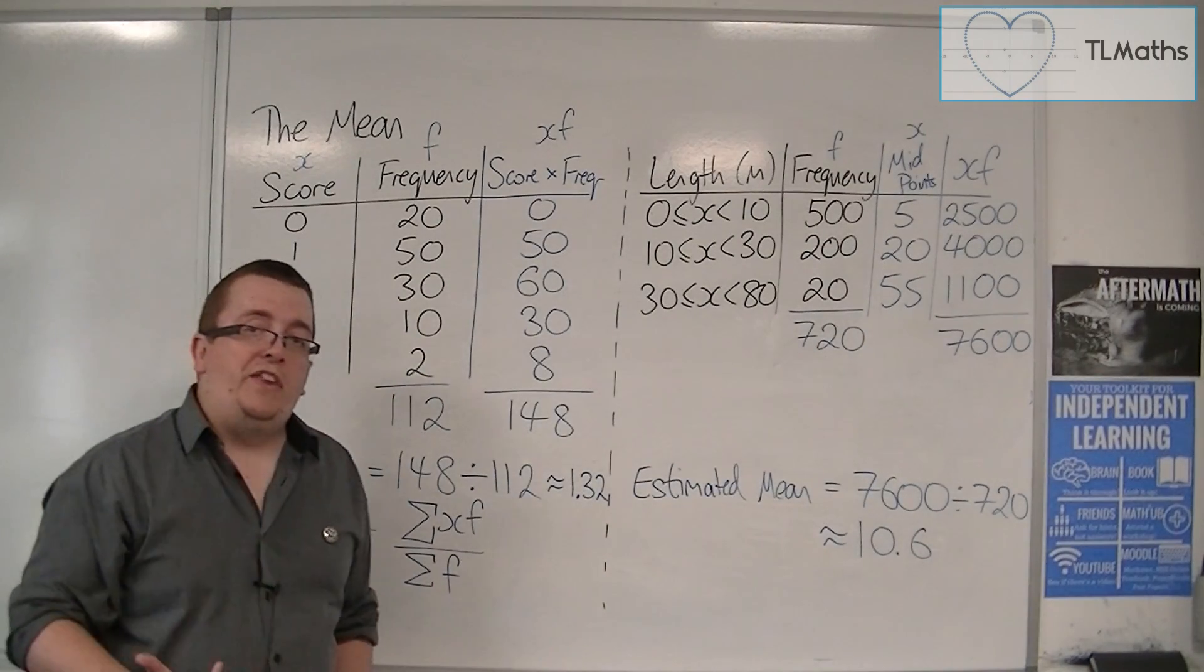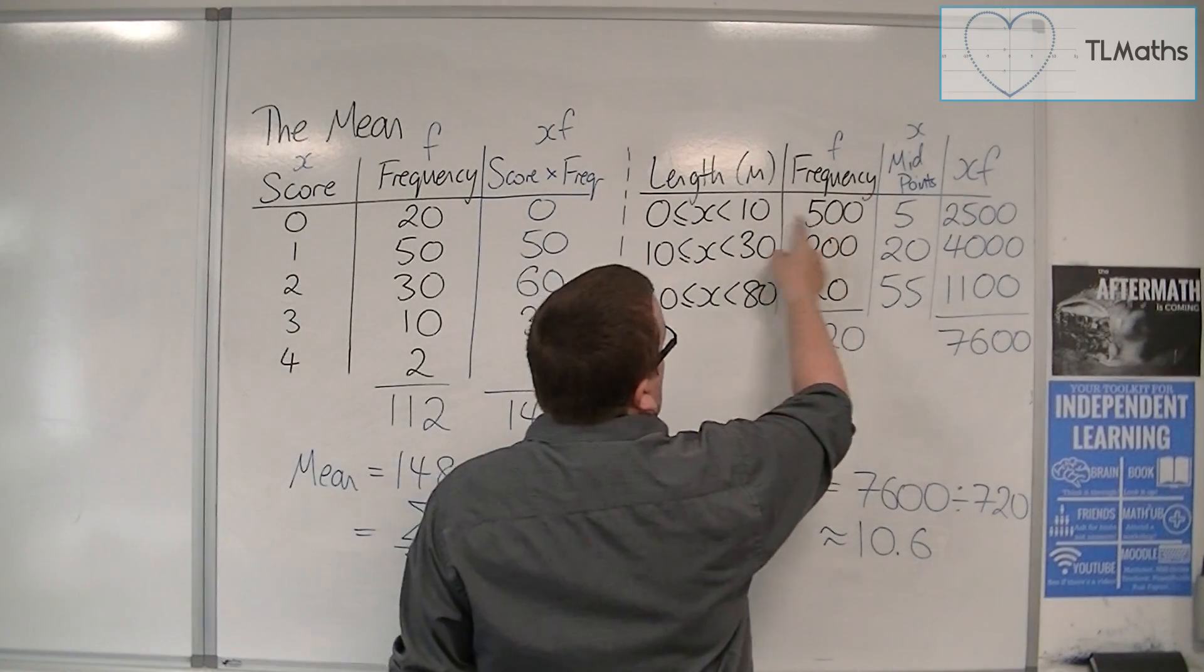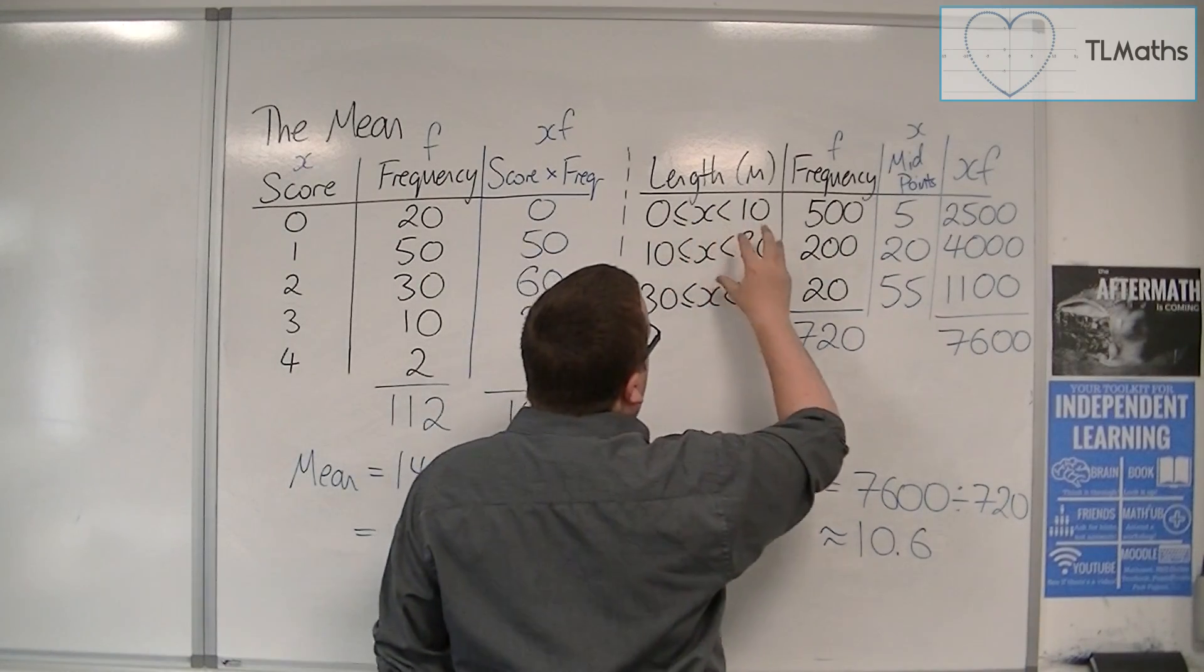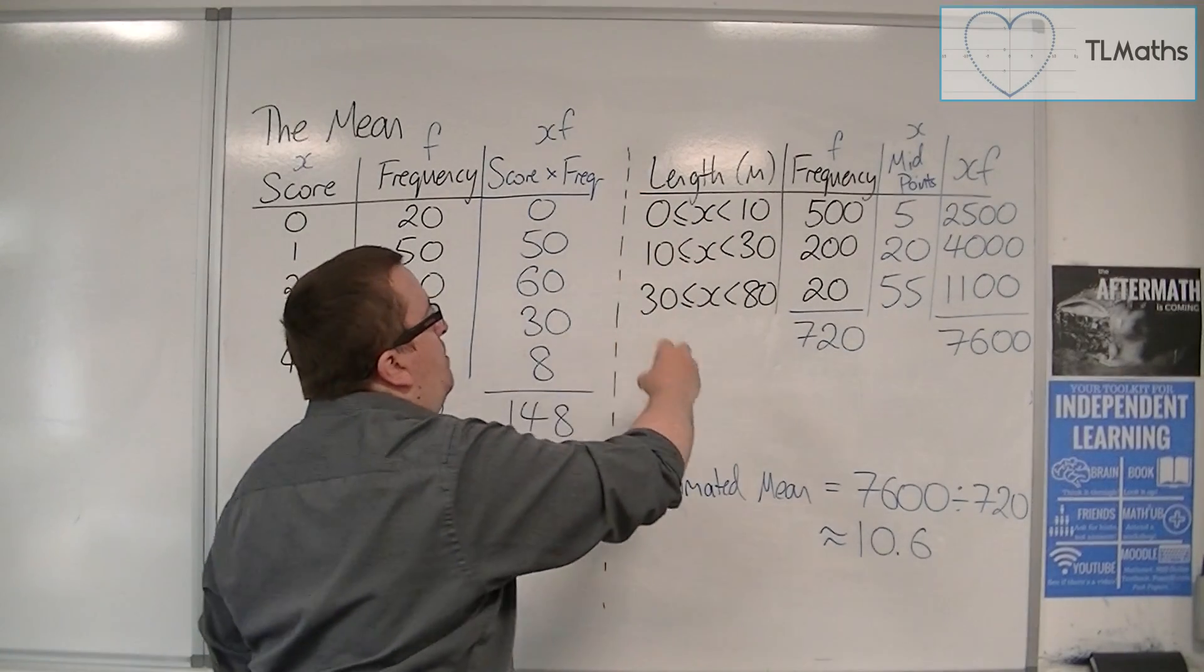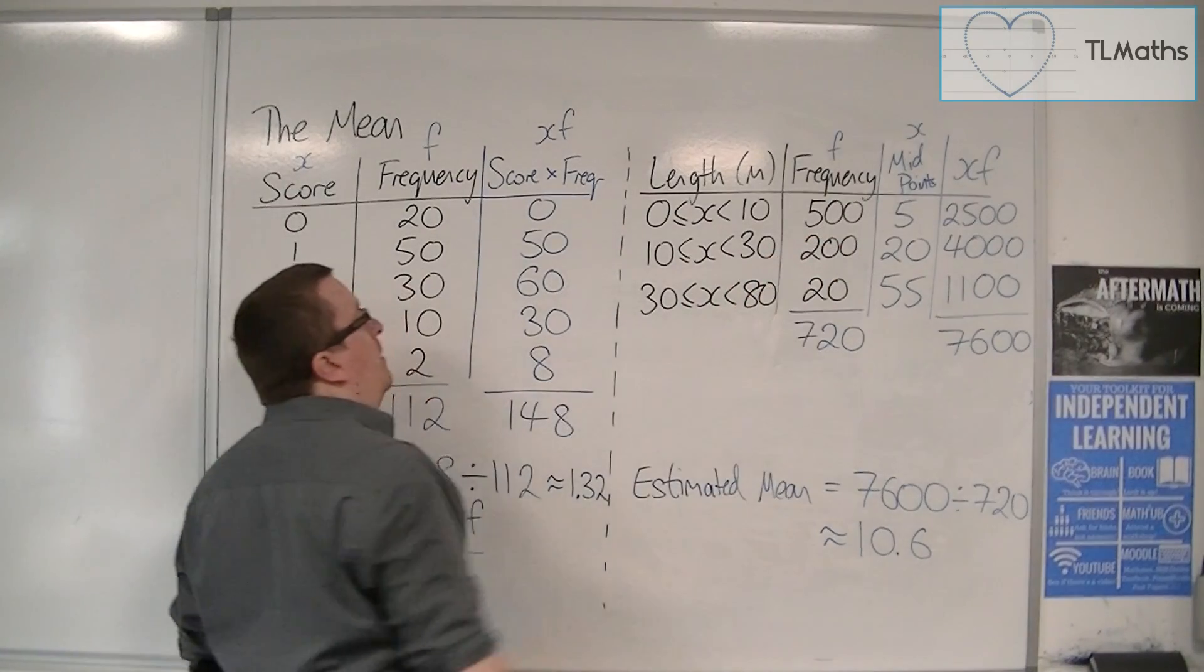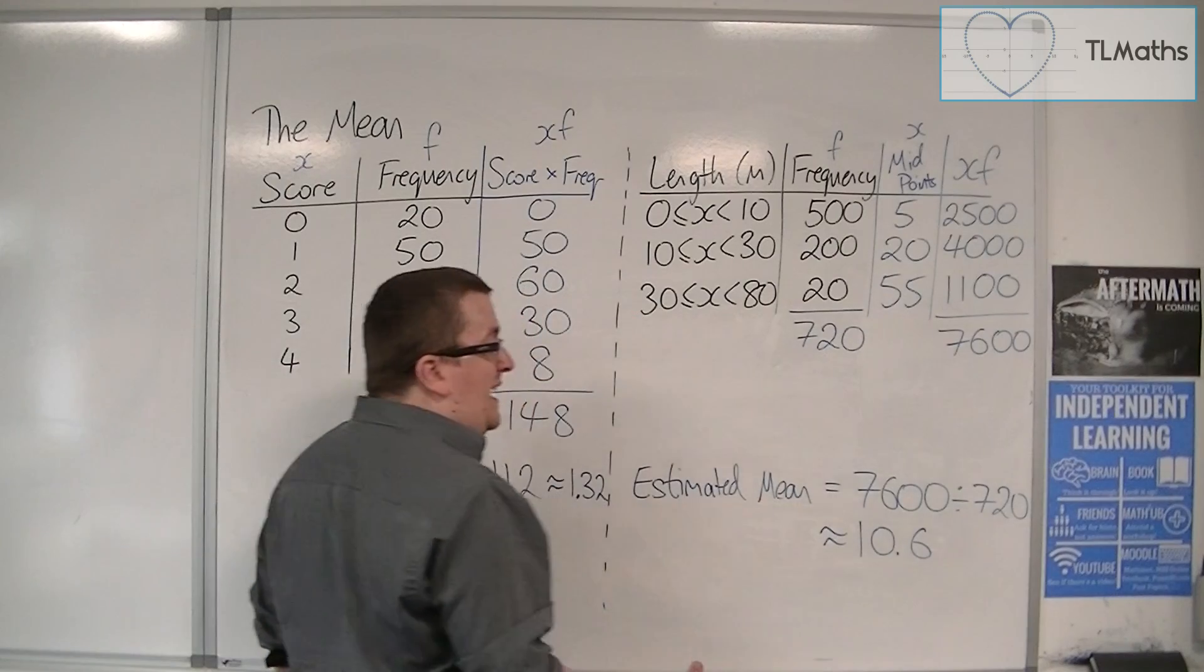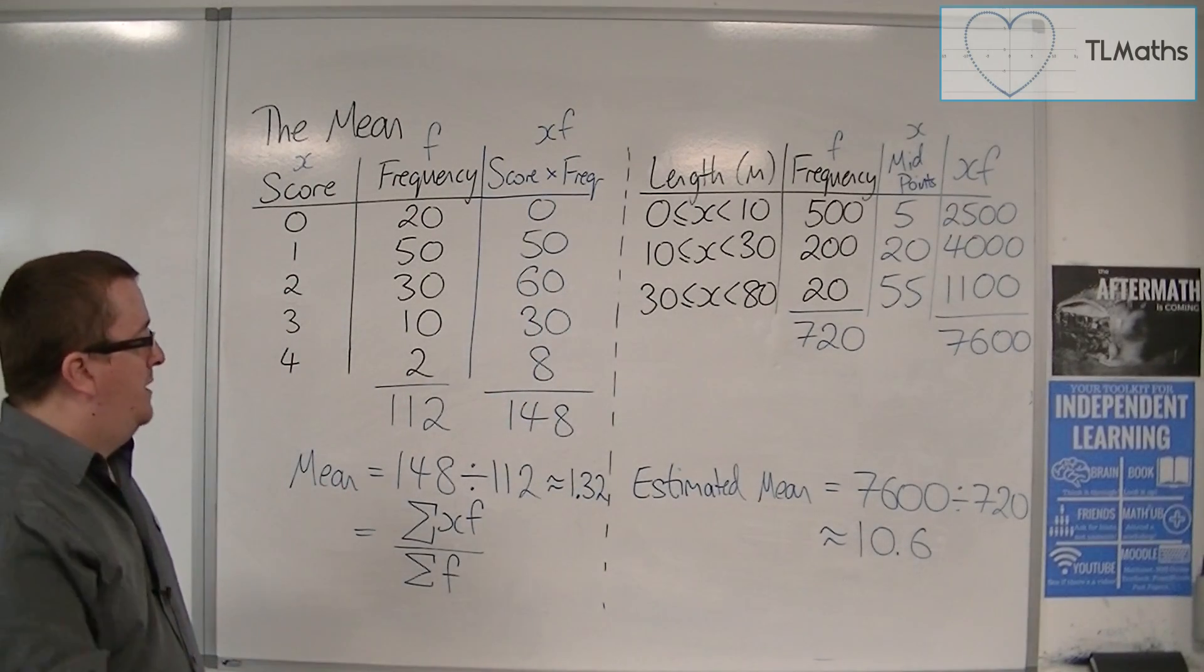Does that make sense? Well, the majority of the data was between 0 and 10. But there's still a sizable amount between 10 and 30. So 10.6 seems appropriate. Quite close to that original group, but slightly over because of the sizable amount outside. So 10.6 is the estimated mean in this case. It's not the exact mean, because we just cannot calculate it. It's an estimate in that case.